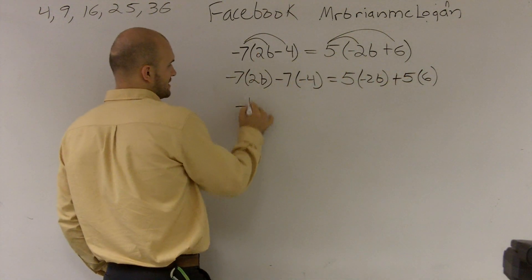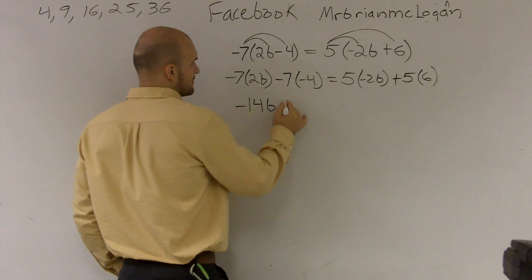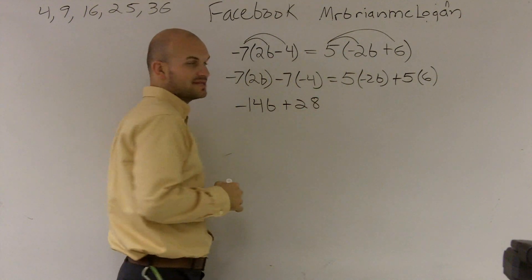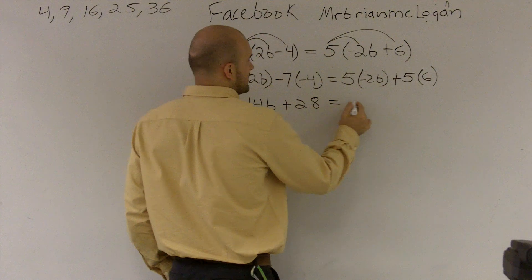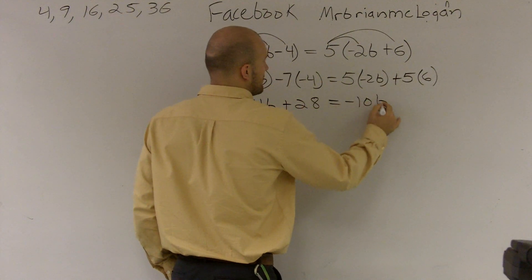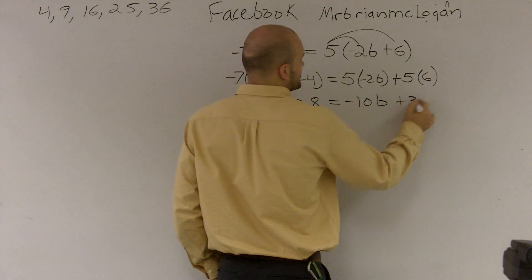When I get this, I get negative 14b plus a negative 7 times negative 4 is a positive 28 equals a negative 10b plus 30.